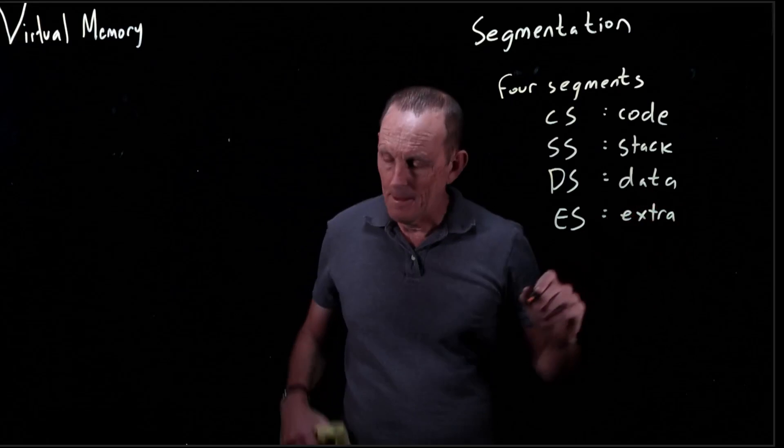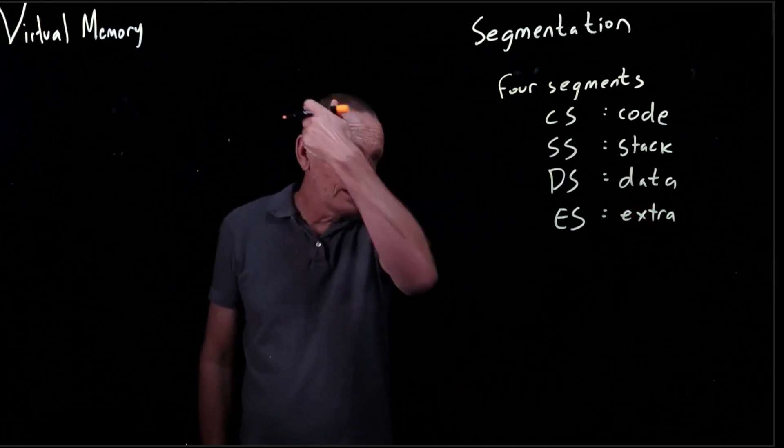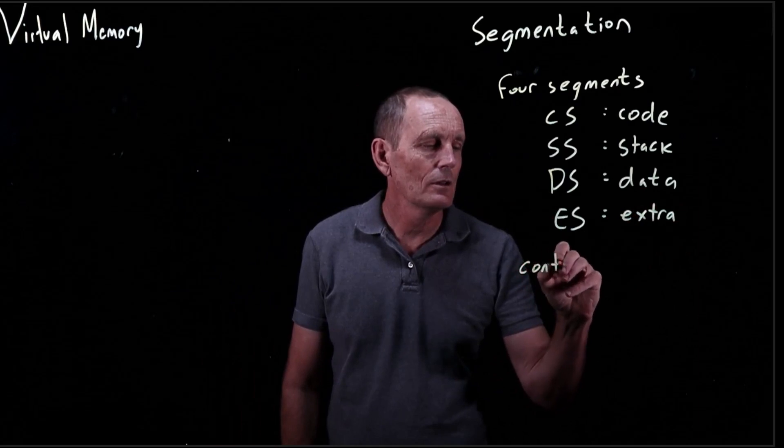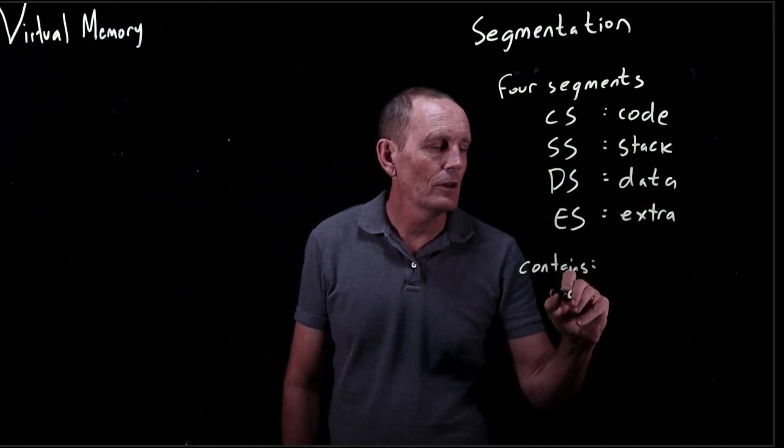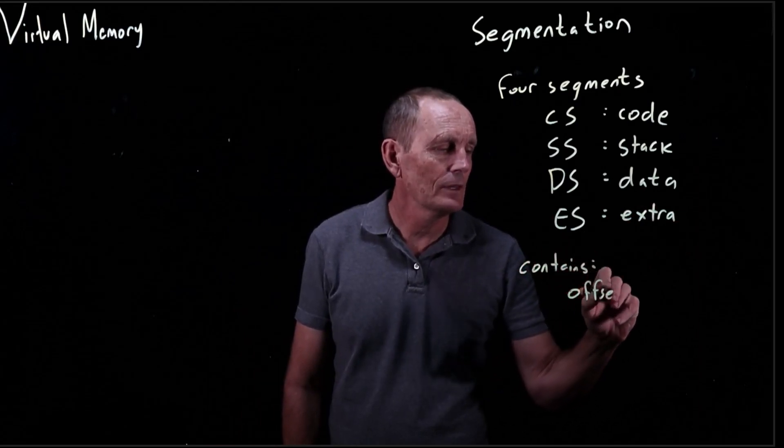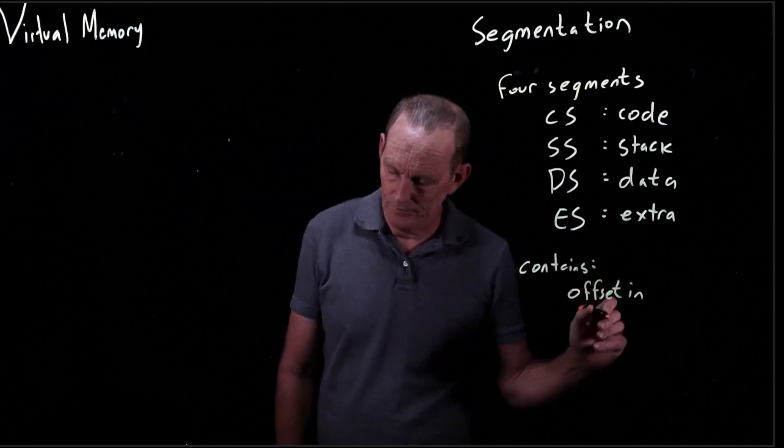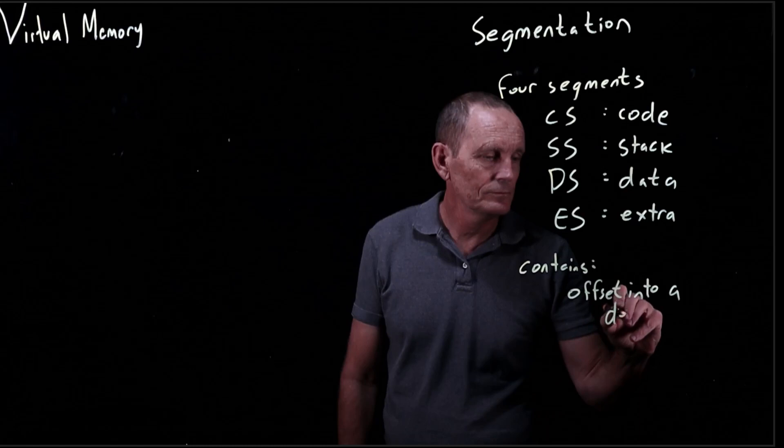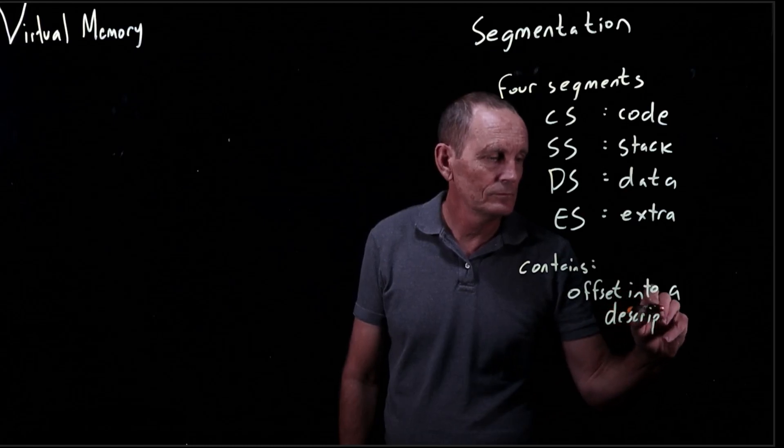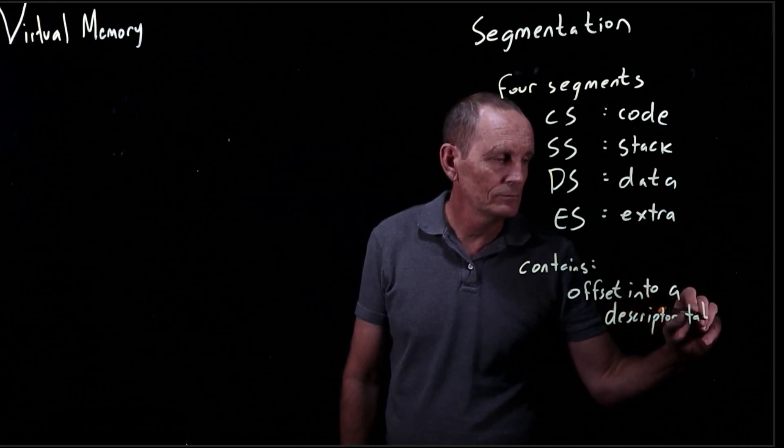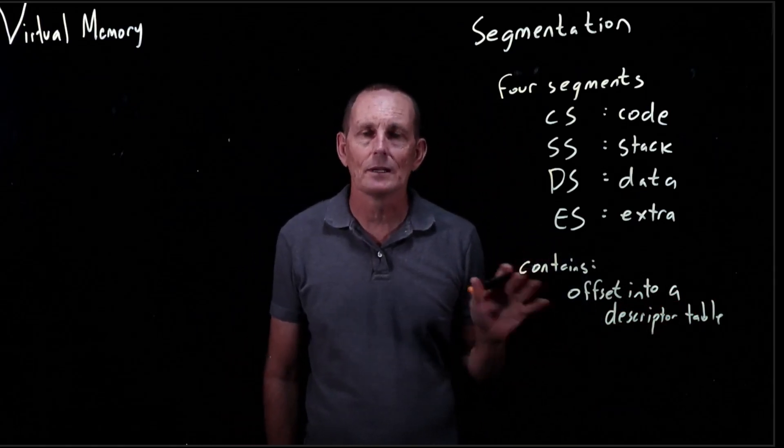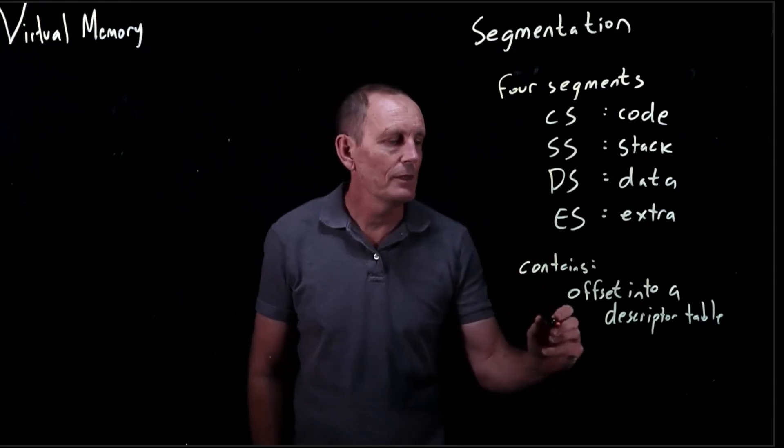Each of these contains an offset into a descriptor table. There are other things in here like a privilege level that I'm not going to really get into.